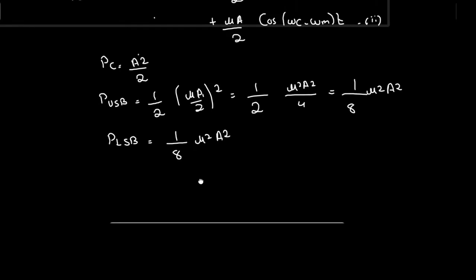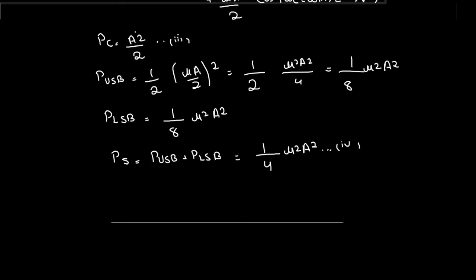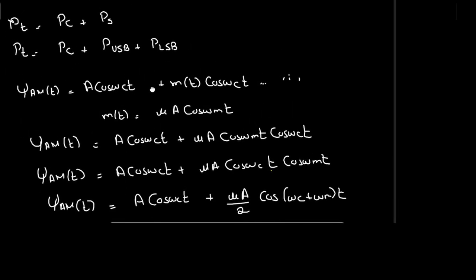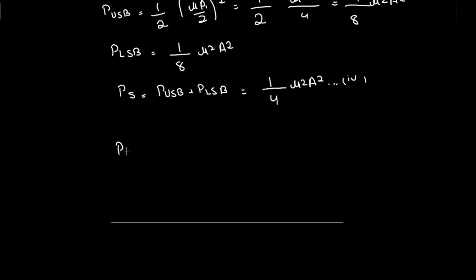The total sideband power P_s equals the upper sideband power plus the lower sideband power, which is μ²A²/8 + μ²A²/8 = μ²A²/4 (equation 4). The total power, equal to carrier power plus sideband power, is therefore A²/2 + μ²A²/4 (equation A).